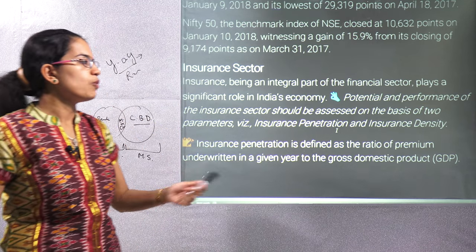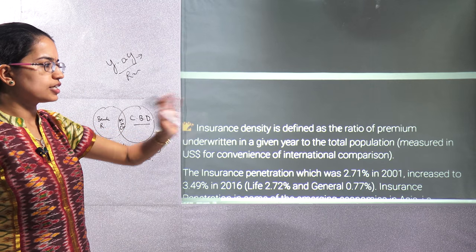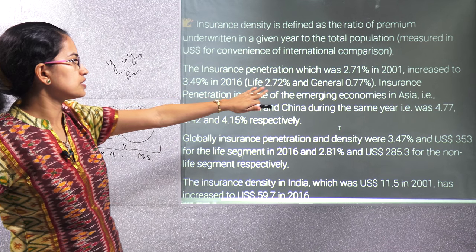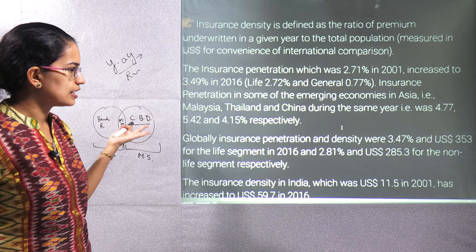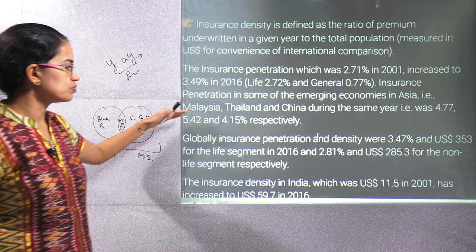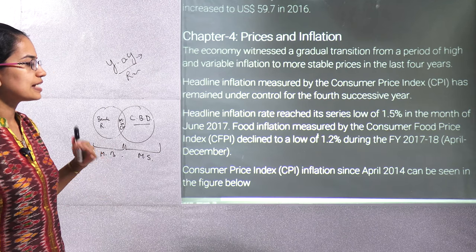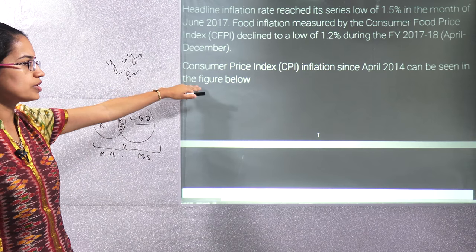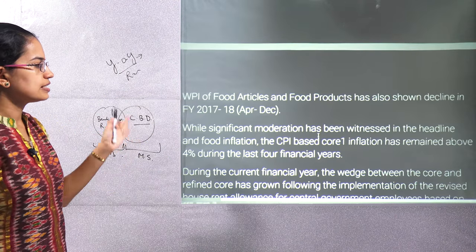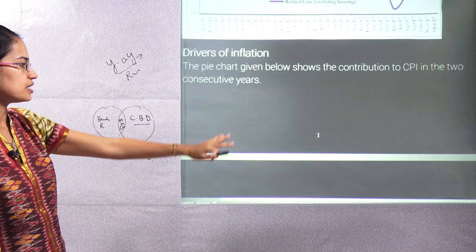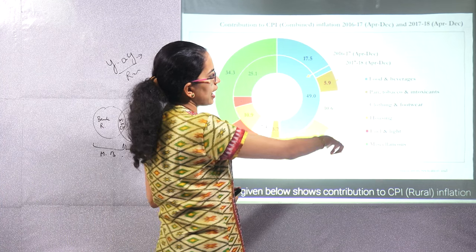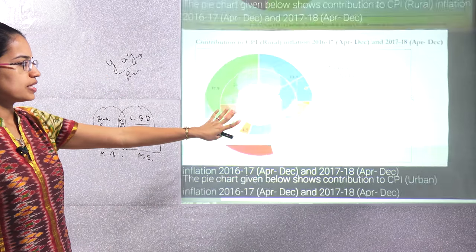Under the insurance sector, two key measures are insurance penetration — the ratio of premium in a given year to GDP — and insurance density — the ratio of premium to total population. Insurance penetration in India has increased from 2.7% to 3.4%, which is good, but countries like Malaysia, Thailand, and China are around 4%, so we need to move up. The consumer price index shows various changes and the drivers of inflation across sectors.